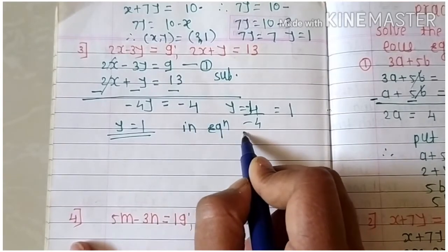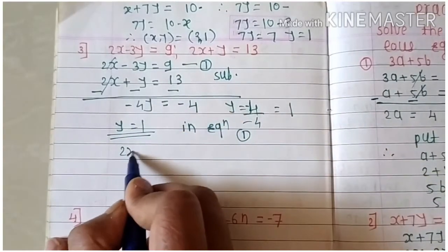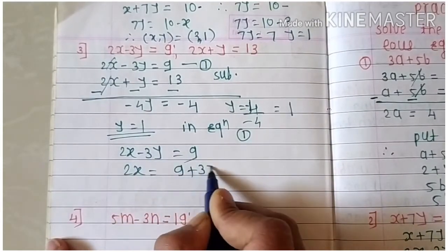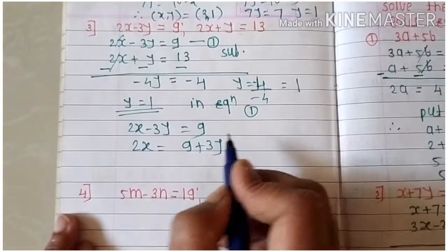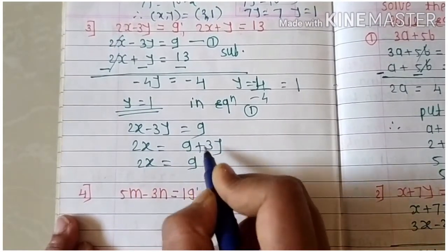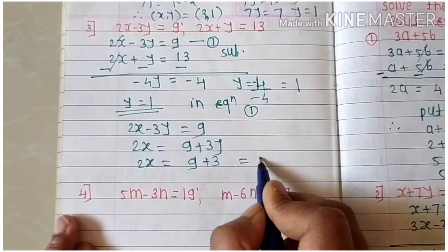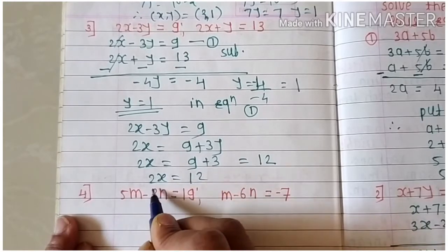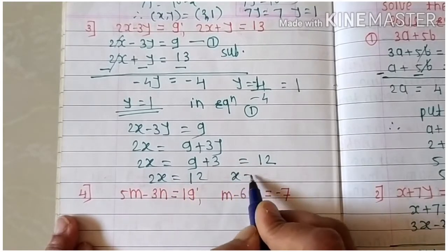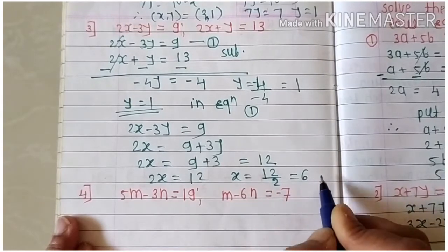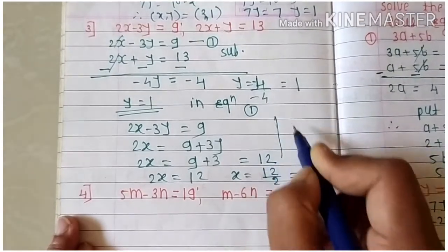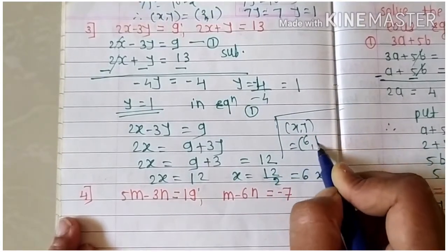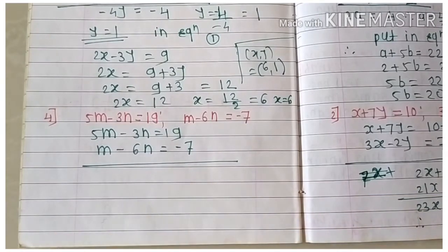Substitute y equals 1 into equation one: 2x minus 3y equals 9, so 2x equals 9 plus 3y equals 9 plus 3 equals 12. Therefore 2x equals 12, giving x equals 6. The solution is x equals 6 and y equals 1. Remember: when same sign, take subtraction; when opposite sign, take addition.